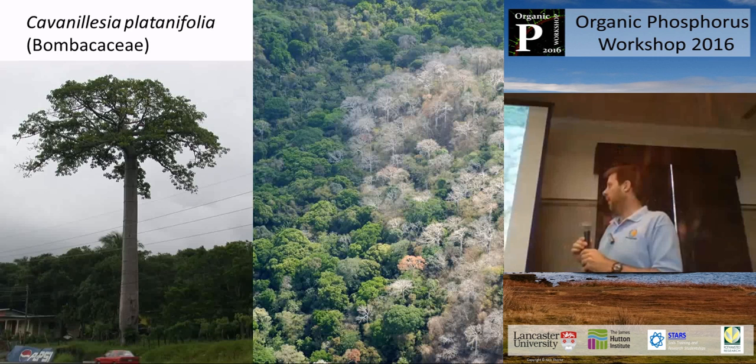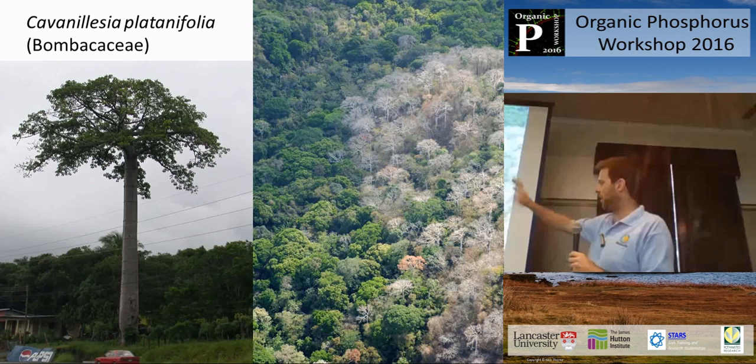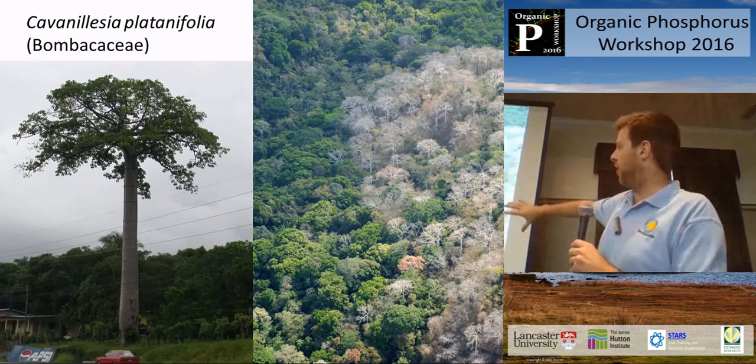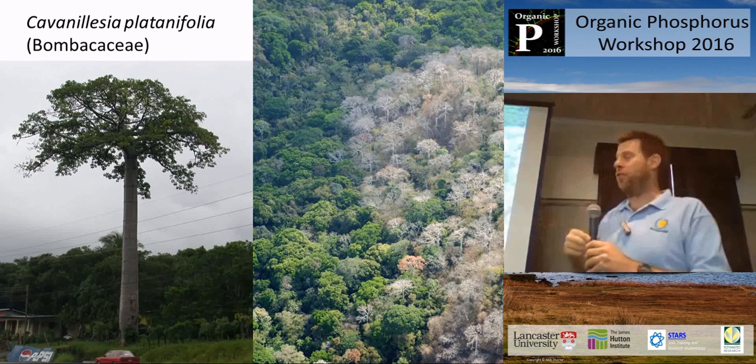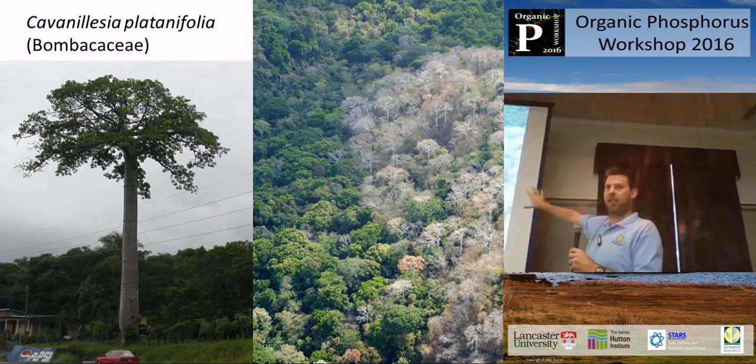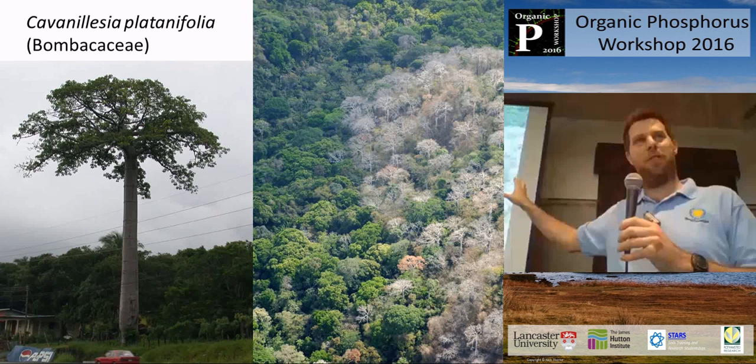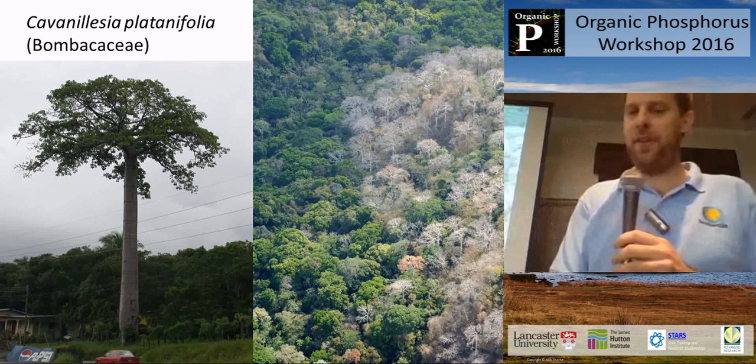There's Cavanillesia platanifolia — a great example of this tree. On the right you can see the banks placed around the Panama Canal. On the left side of a geological fault is basalt, with very low phosphorus soils and absolutely no Cavanillesia. On the right are marine sedimentary soils with high phosphorus, and the landscape is covered in this deciduous Cavanillesia platanifolia. A very clear example of the power of phosphorus to determine the distribution of species.